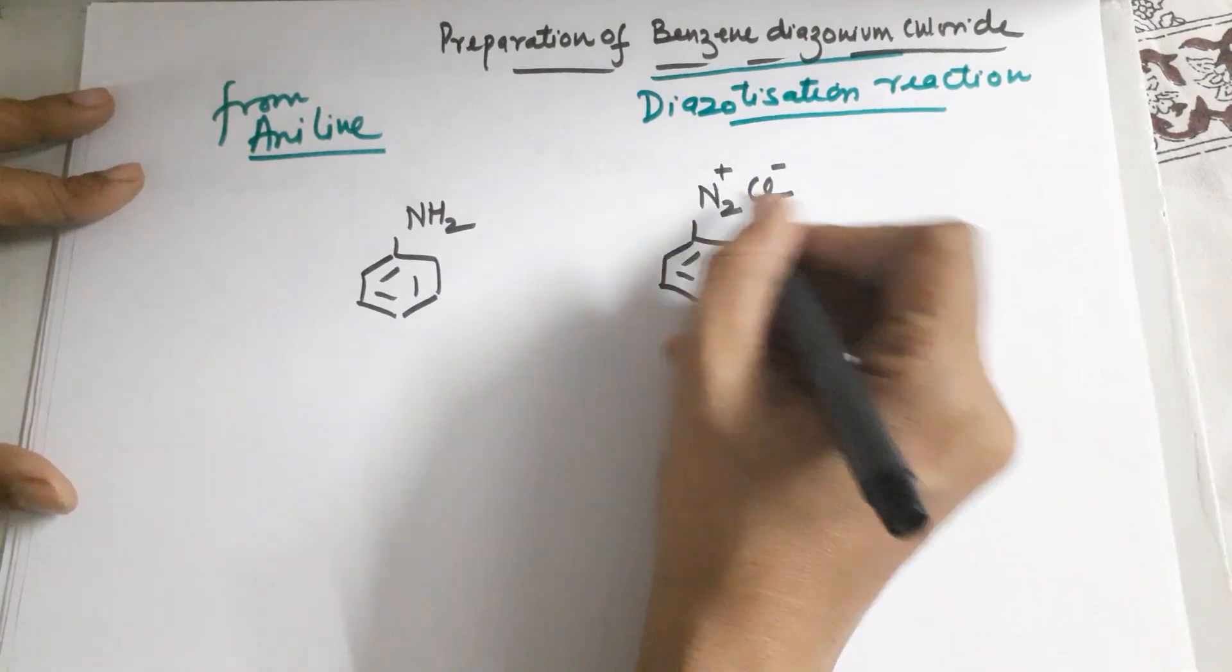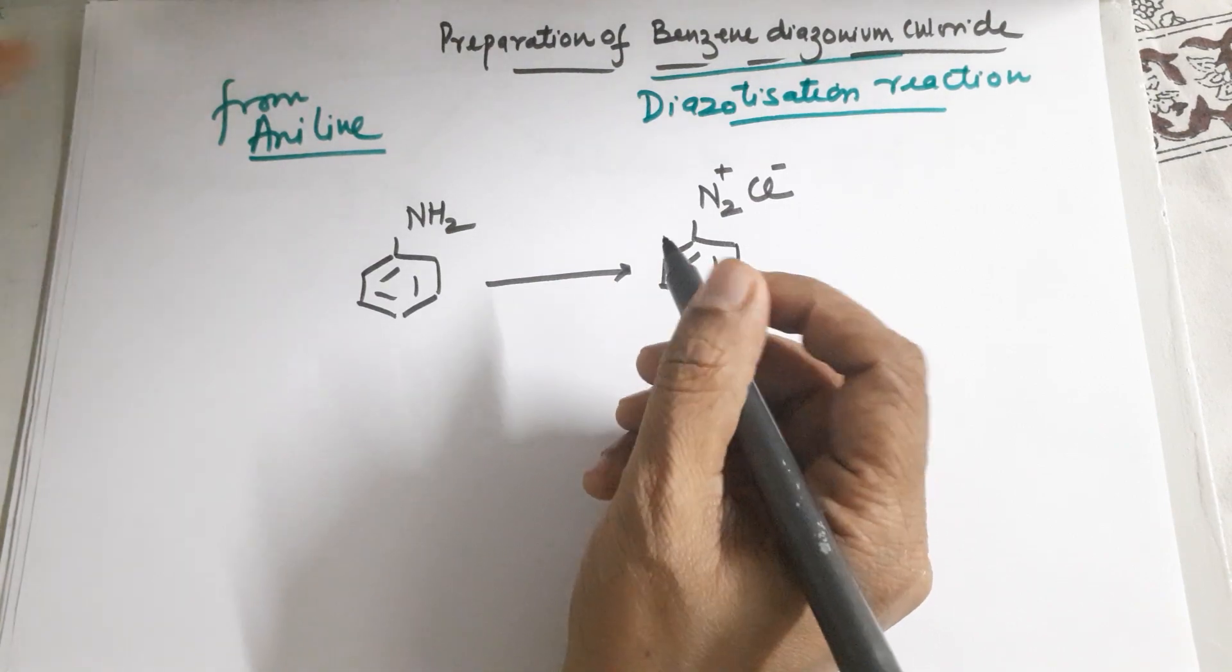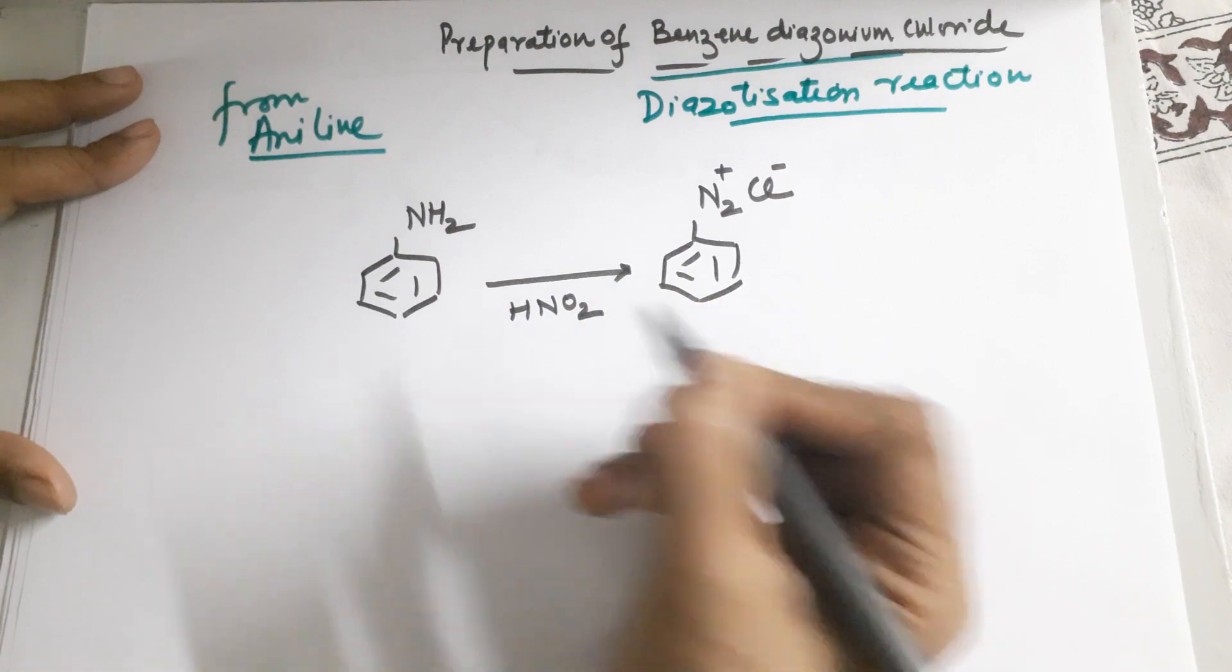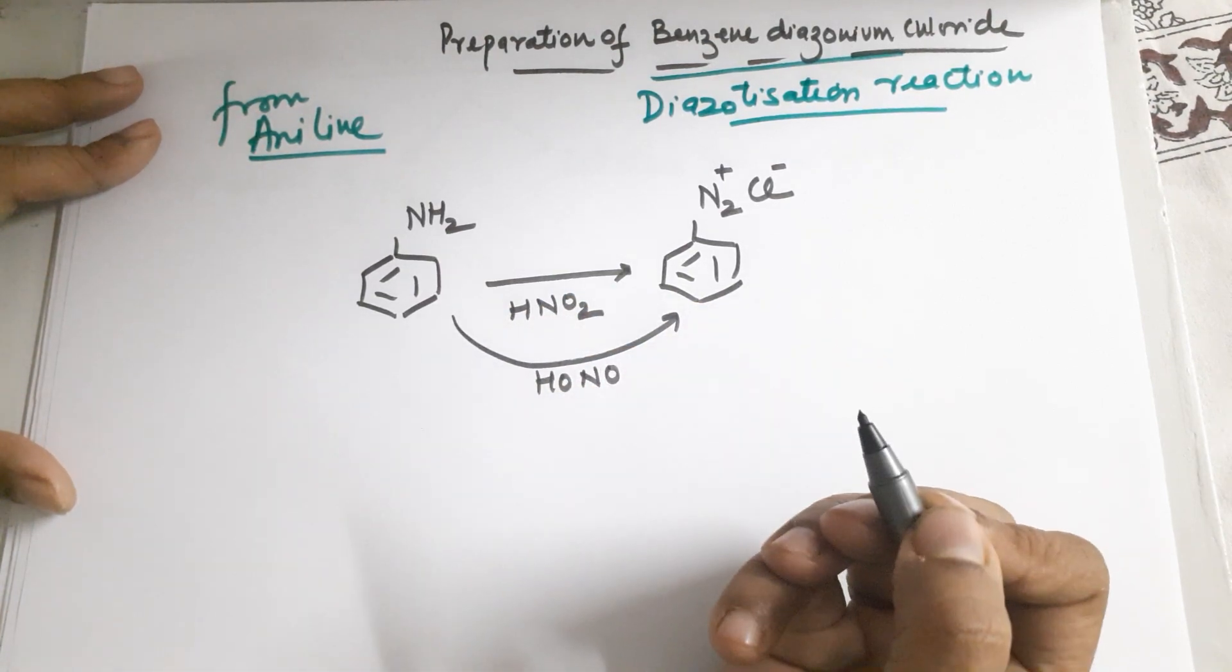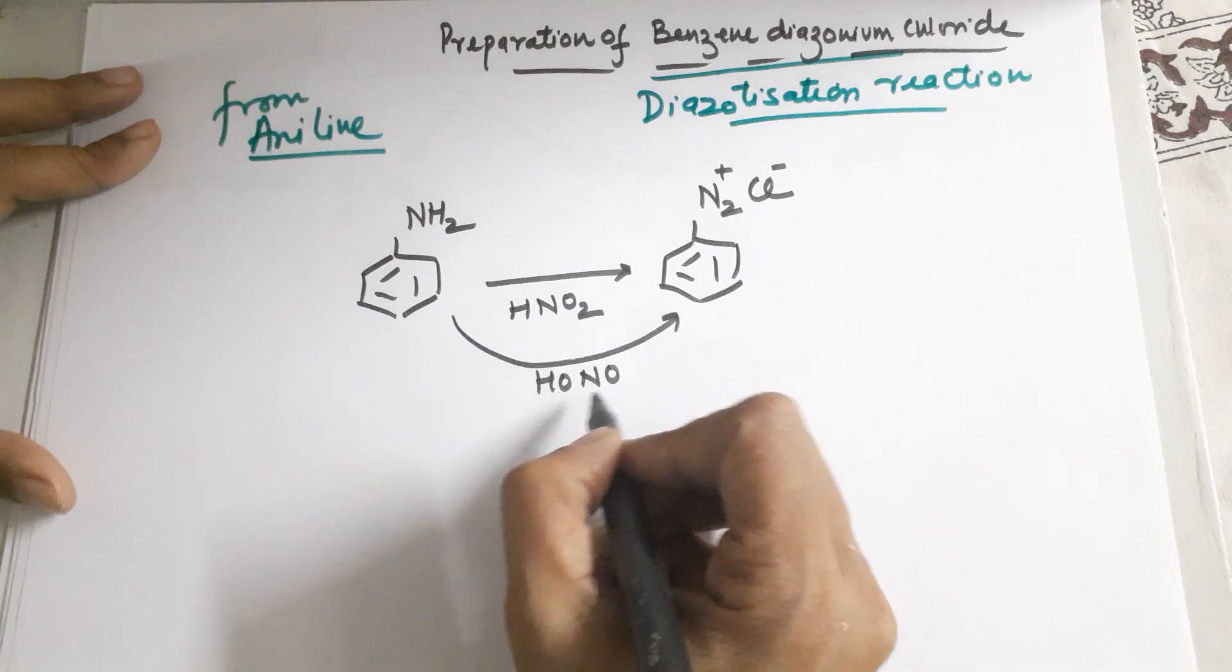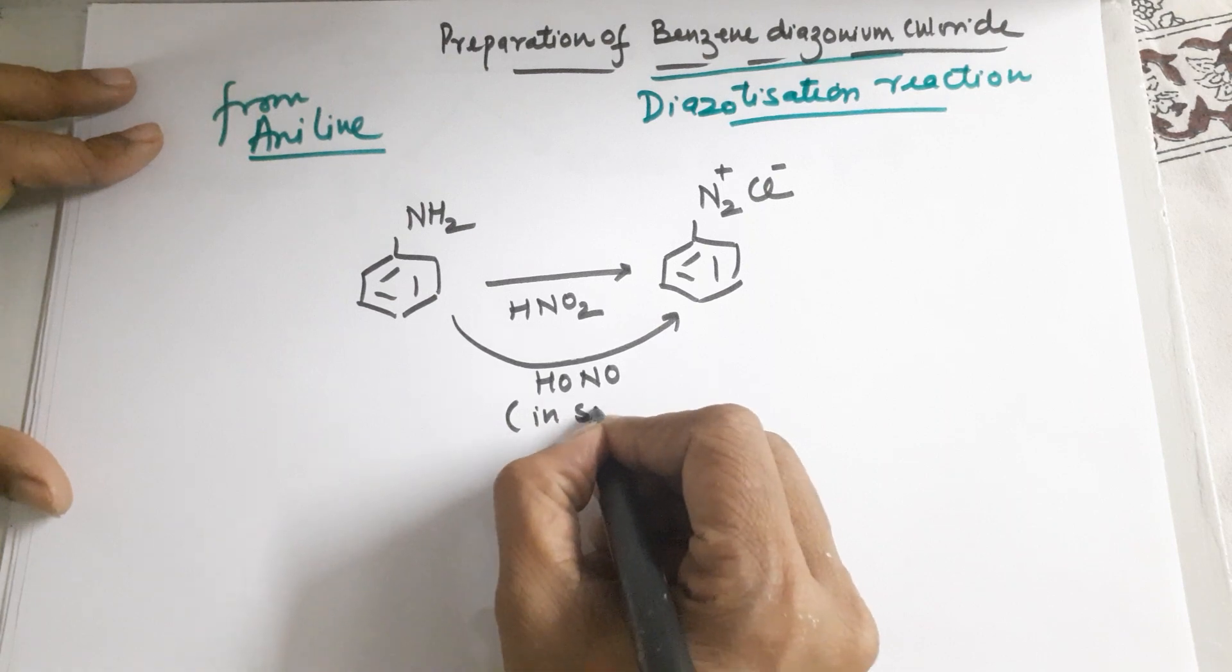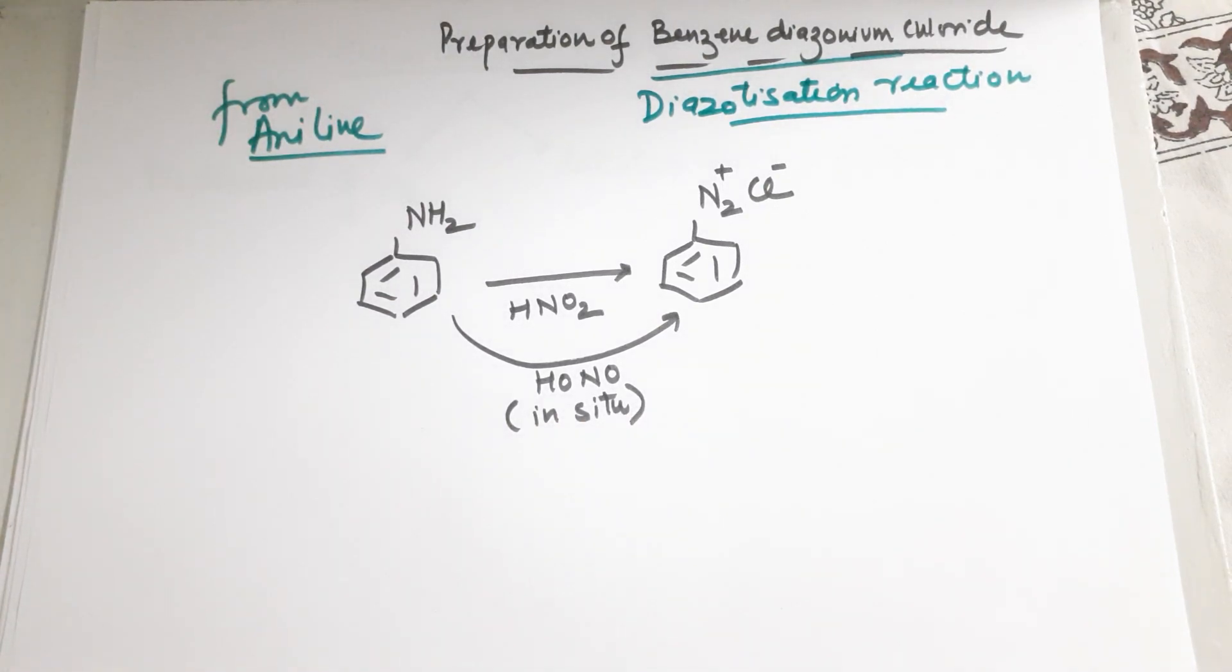Now the conditions required to prepare this are nitrous acid, HONO. Unfortunately, this is not available in the market. It has to be prepared and used, so we always prepare it in situ. This is also a reactive entity.